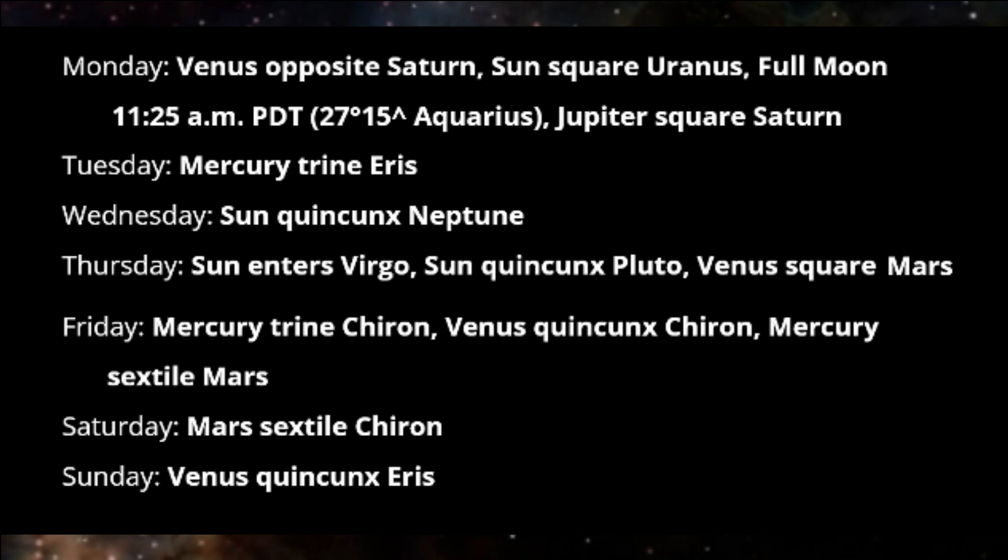On Tuesday, Mercury is trine Eris. People may be especially blunt, direct, or forceful in their communications and their choice of words.